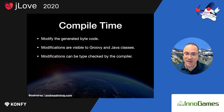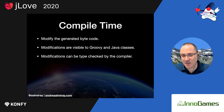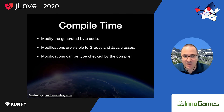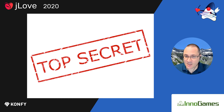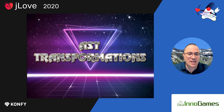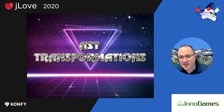That means any Groovy class can have access to those modifications, but any Java class or any other JVM language that loads the bytecode will also see the changes. And all these modifications can also be type-checked by the compiler. The secret sauce for compile-time metaprogramming is AST transformations. AST stands for Abstract Syntax Tree — an in-memory representation of your program.